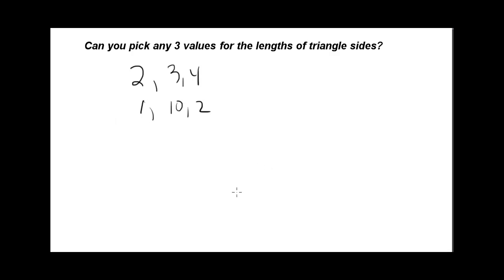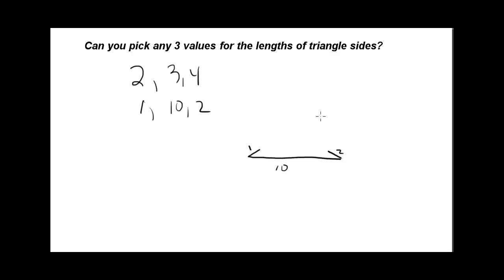One picture will show you that that's not possible. If I make a really small side like 1, a really long side like 10, and then something like 2, you can see that these numbers — 1, 10, and 2 — there's no way we're going to be able to make a triangle from this. So there's obviously some rule or set of guidelines that can dictate when we can make a triangle out of three numbers.